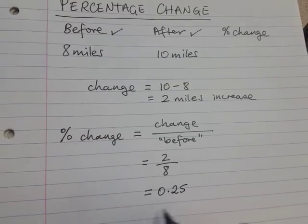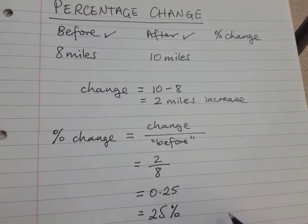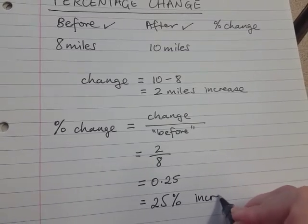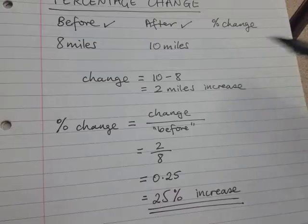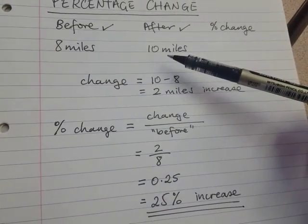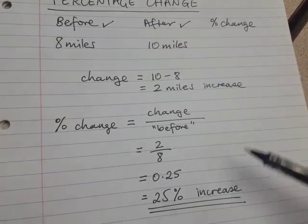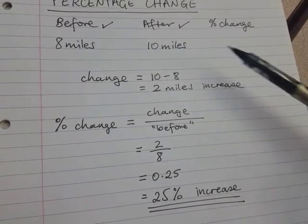And change this decimal into a percentage. That's a 25% increase. So going from 8 miles last week to 10 miles this week, the percentage change was a 25% increase because it has gone up.